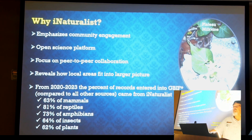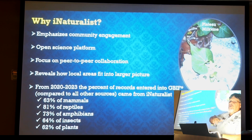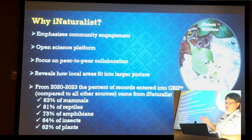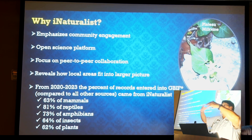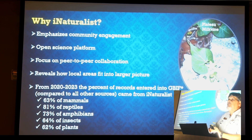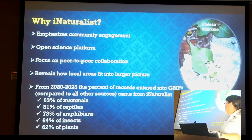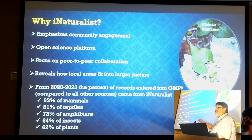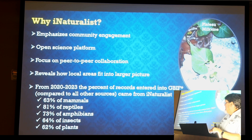What's really amazing is that between 2020 and 2023, these percentages show the number of records that went into GBIF — the Global Biodiversity Information Facility, a storage house for global observations about plants and animals. You can see that 63% of mammal observations came from iNaturalist, all the way up to 81% of reptiles. The reason birds aren't on there is simply because we have eBird. And notably, 62% of the plants documented in GBIF are now coming from iNaturalist.